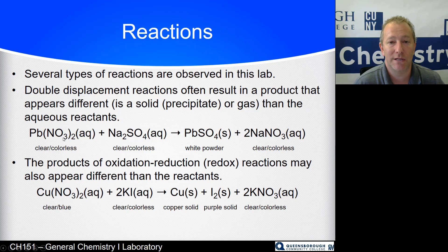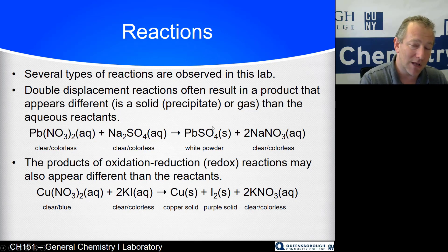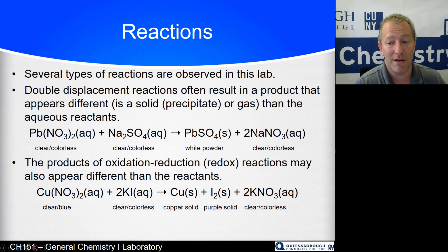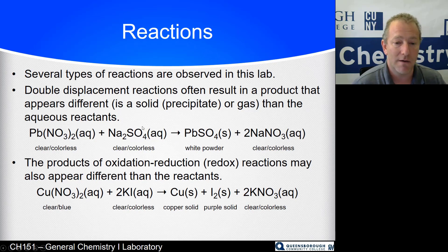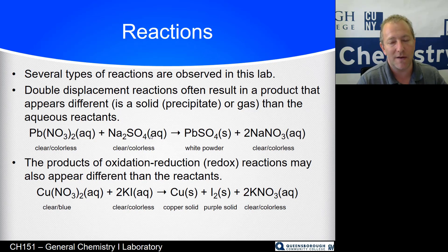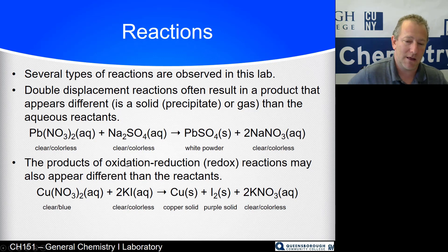Lead nitrate is clear and colorless in solution, and sodium sulfate is clear and colorless in solution. Yet lead sulfate — using those solubility rules from the last lab — is an insoluble white powder, while sodium nitrate is still soluble because it has an alkali metal cation and nitrate anion with no exceptions. So the presence of a white powder is a nice indicator of a reaction between lead and sulfate. However, a white powder can also indicate other reactions, like silver with chloride, so you use a series of reactions to figure out which it is.